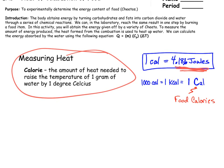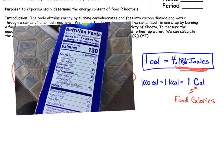When it comes to food — like on the package of graham crackers — they give us the calories in the food. We've got to note that a food calorie is actually a kilocalorie. So there's a difference between a food calorie and the chemistry definition of a calorie. If we abbreviate it as 'Cal' with a capital C, that's a clue we're talking about a kilocalorie, whereas 'cal' with a lowercase c refers to the chemistry definition of a calorie.